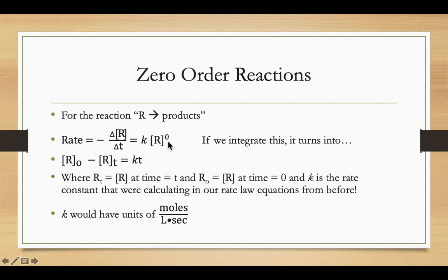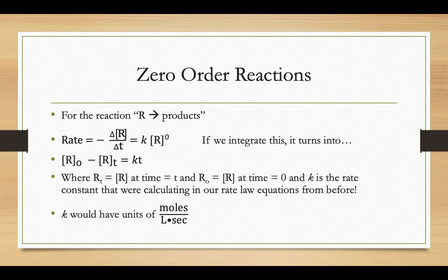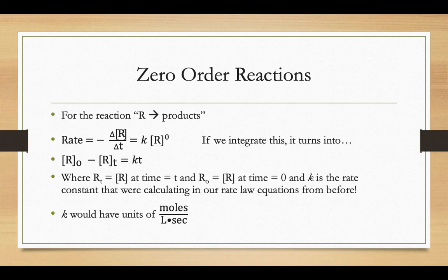If you take that integrated rate law, and I kind of joke with my students that you kind of put this rate law equation into the magical calculus machine, what happens is that your change of your concentration over time, so R sub O here is your original concentration at time equals zero, and then R T is your concentration at some point later on, that would be equal to the rate law constant, K, times your time.